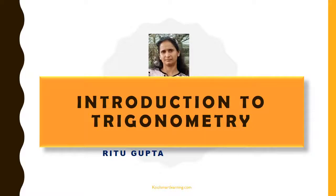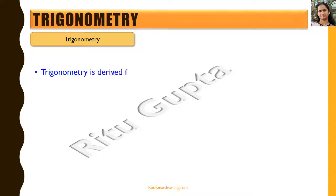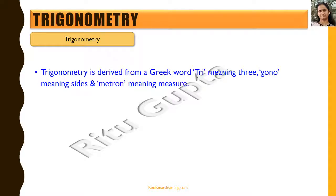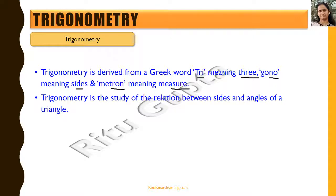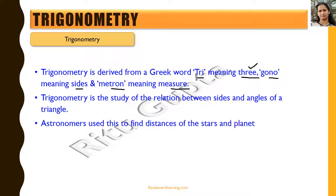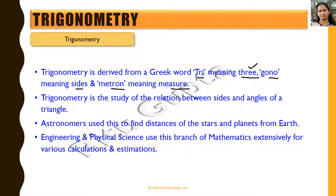This session is going to give an introduction to trigonometry. Trigonometry is derived from Greek words: 'tri' meaning three, 'gono' means sides, and 'metron' meaning measure. So trigonometry is basically the study of the relation between sides and angles of a triangle. Astronomers have used this to find distances of stars and planets from Earth, and engineering and physical science use this branch of mathematics extensively for various calculations and estimations.